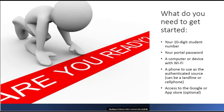What do you need to get started? You're going to have to access your portal, so you'll need your 10-digit student number and your portal password. You'll also need a computer or device that has Wi-Fi. You'll need a phone that you can use as an authenticated source — this could be either a landline or a cell phone. And if you would like to install the Outlook app on your device, you'll need access to the Google or App Store.